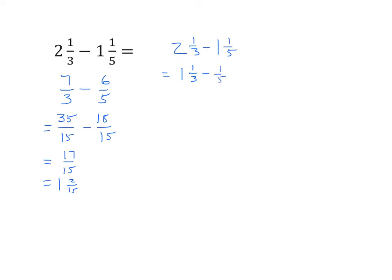This is much easier. Now we can change it to an improper fraction once again. We only have to use that technique for the minuend. The subtrahend is a regular fraction. So now I have my 4 thirds minus 1 fifth.